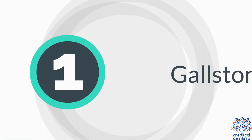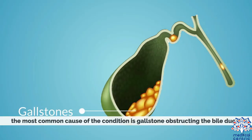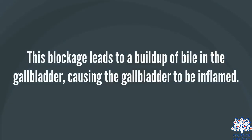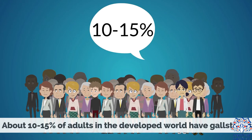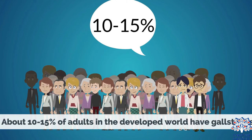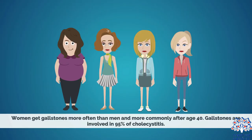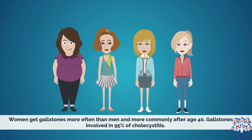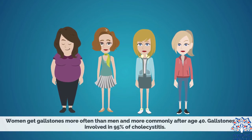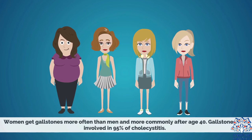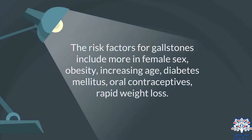The most common cause of cholecystitis is a gallstone obstructing the bile ducts. This blockage leads to a buildup of bile in the gallbladder, causing inflammation. About 10–15% of adults in the developed world have gallstones. Women get gallstones more often than men, and more commonly after age 40. Gallstones are involved in 95% of cholecystitis cases. Risk factors include obesity, increasing age, diabetes mellitus, oral contraceptives, and rapid weight loss.